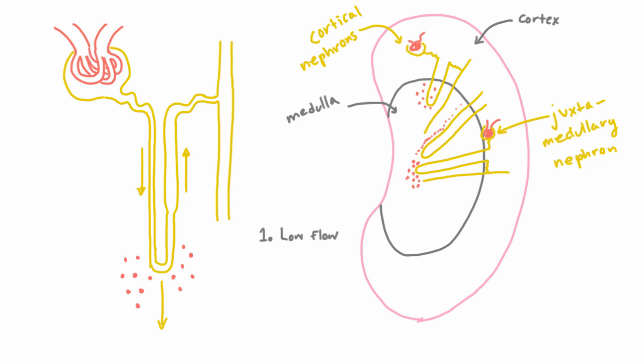That way it minimizes how much of this high concentration gets washed away. And the second intelligent thing that the kidney does is that instead of sending blood vessels through this way, in which case they would equalize with the high concentration here in the medulla and then get washed away, it sends them through a more intelligent path. It actually sends them through a path that mirrors the loop of Henle.